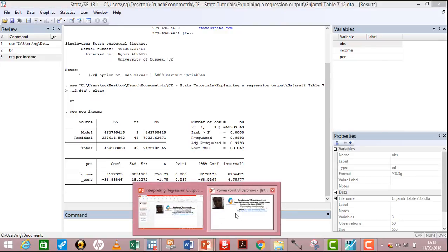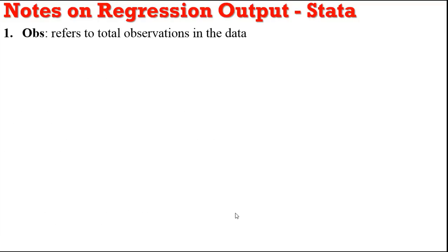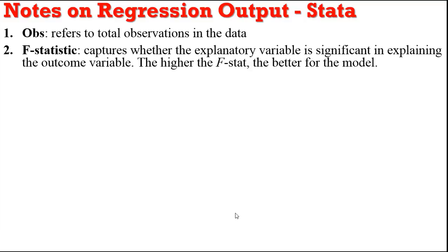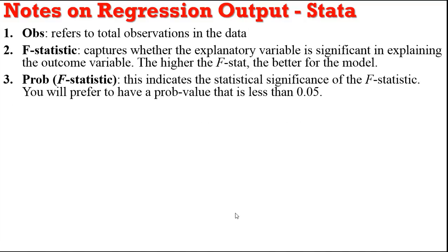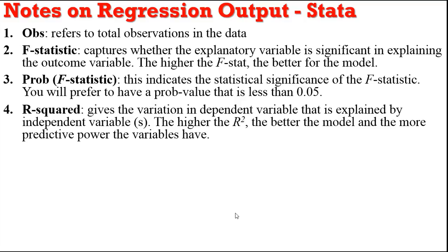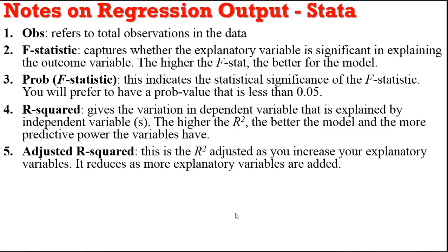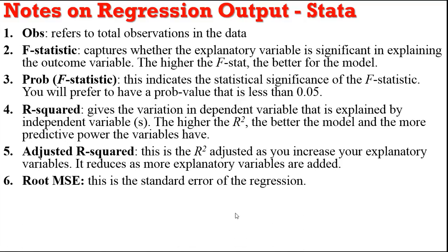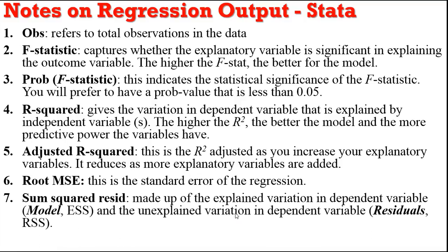To wrap up: observations refers to total observations in your data. The F-value — the higher the value, the better for your model. The Prob value tells you how significant the F-statistic is. R-squared tells you the variation in the dependent variable explained by the regressors — the higher the R-squared, the better the model and the more predictive power. Adjusted R-squared reduces as more explanatory variables are added and may become negative with too many variables. Root MSE is just the standard error of the regression.